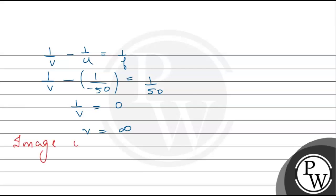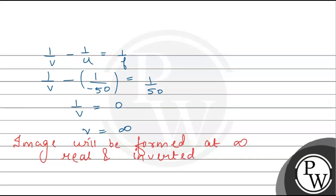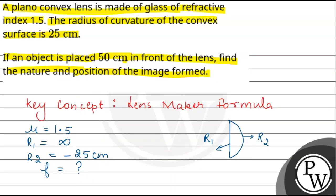The image will be formed at infinity. When the image is at infinity, it will be real and inverted. At infinity, the image will also be highly magnified — that is, the image size will be very large compared to the object. Hope you understood it well, best of luck!